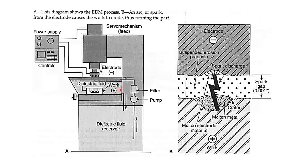Here is a diagram of the EDM process. You can see the positive and negative electrodes, dielectric fluid inside, the workpiece, power supply, controls, the CNC system, and the dielectric fluid reservoir. The work is done right inside the chamber.